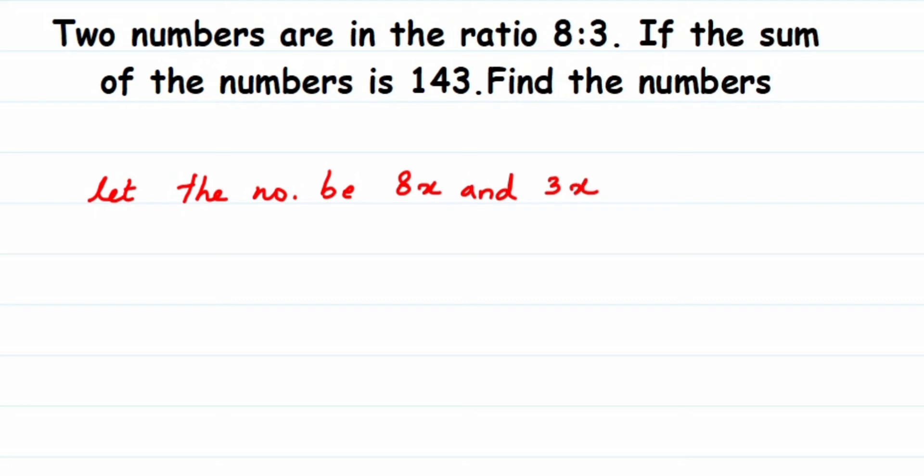According to the question, they have given that if I add them—they're saying the sum of these two numbers is 143. Sum means obviously it's addition, so I'm going to add them. So 8x plus 3x is giving me 143.